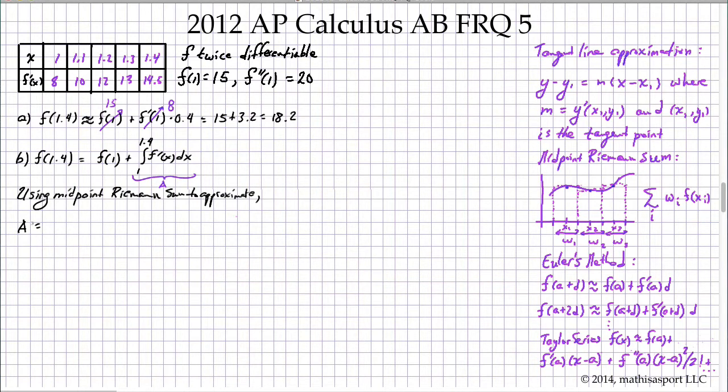So this is an approximation. Our width in each case is 0.2, and our height at 1.1 and then our height at 1.3 are what we're using. What's the height at 1.1? It's 10. What's the height at 1.3? It's 13. And so we get for A, what is that? 23 times 0.2, which is 4.6.